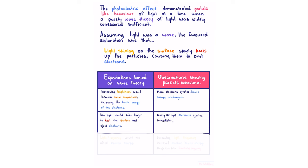Based on the wave theory, light frequency would not affect electron energy. When in reality, increasing light frequency increased electron kinetic energy, and there was no ejection below a threshold frequency.